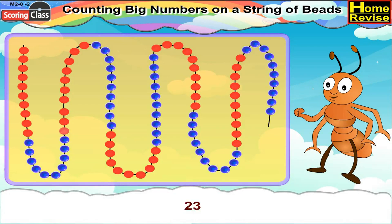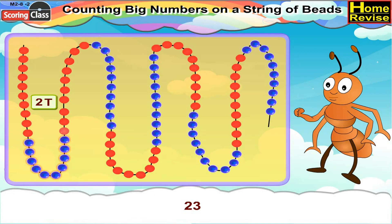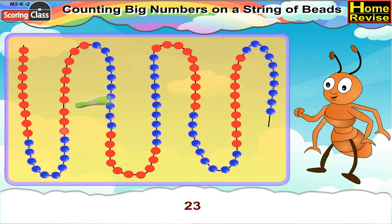Number 23. For number 23, first we will take 10 red beads, followed by 10 blue beads, and after that we will count 3 more red beads and place the clip after the 3 red beads. So, we have number 23.